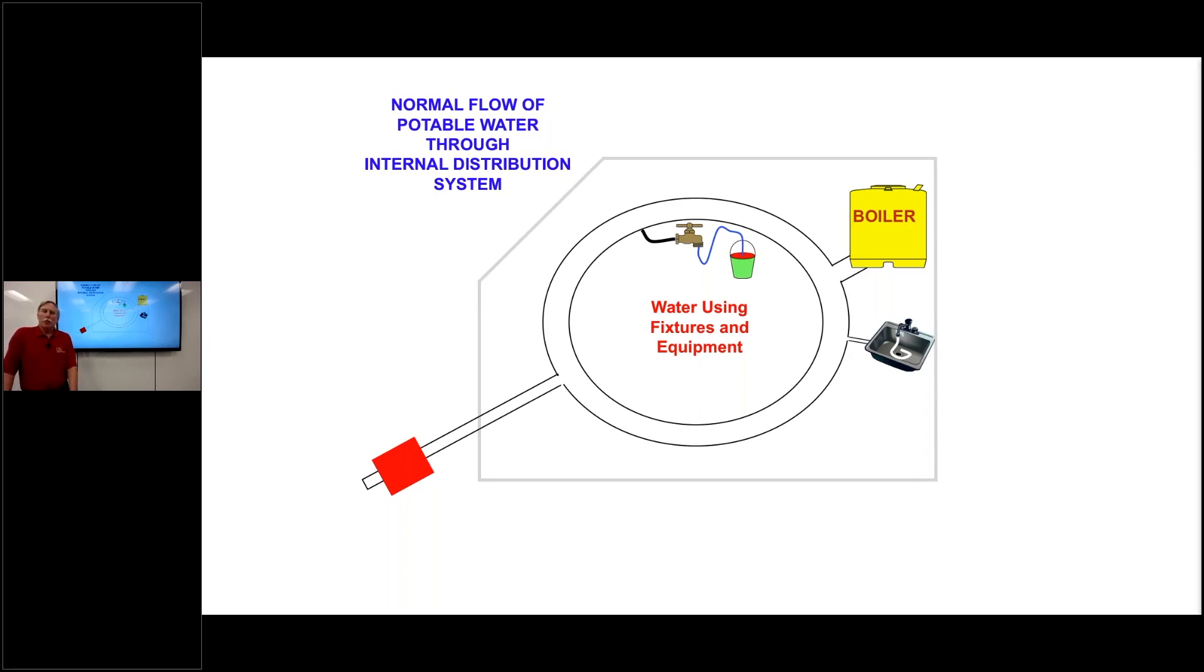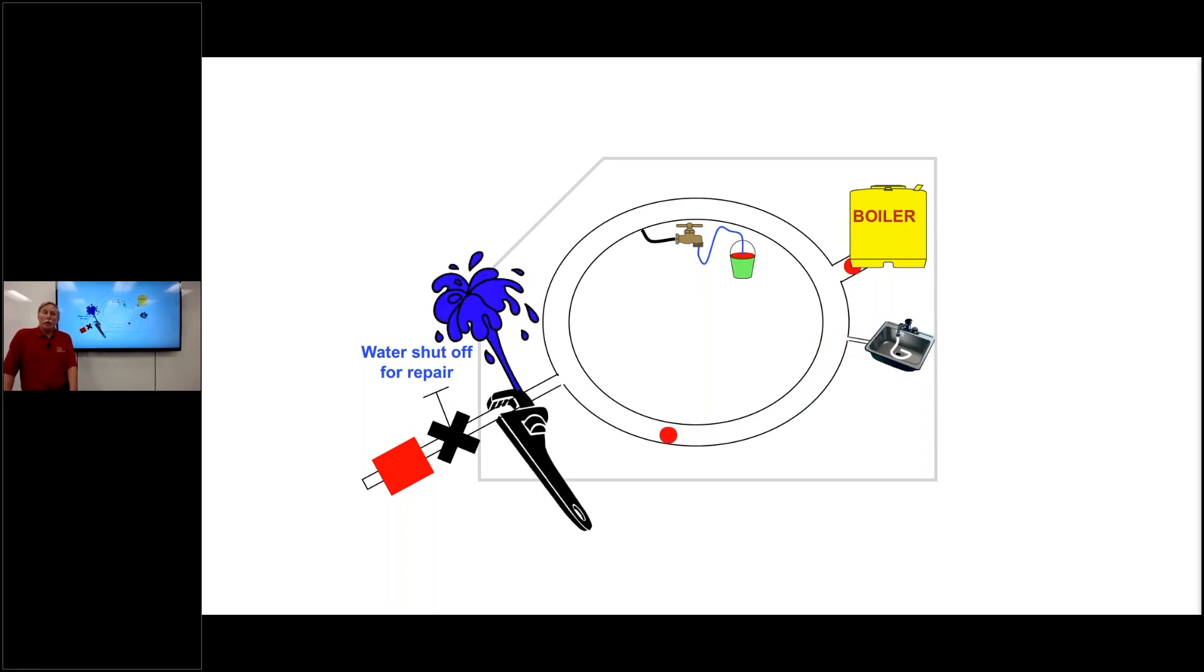So if we look at that same internal plumbing system now, and let's say as the water flows in, it goes to all its respective uses within a building, within a residence too. Should there be some need for repair on that internal plumbing system and the water system is shut off, we've now suspended the water in the distribution system within the building. And then once that repair is made and maybe there may be a depressurization, you see that without proper backflow protection at each of the water using fixtures or water using equipment, there could be a backflow within the internal plumbing system. Keep in mind the backflow preventer out at the service connection prevents it from getting back into the distribution system. However, the contamination within the facility could be taking place.